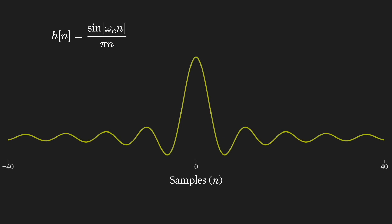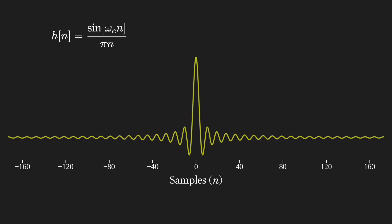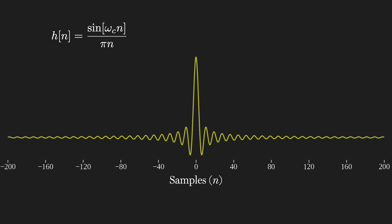They're infinite in duration, extending to positive and negative infinity. Yes, the oscillations get small as you get further away from time zero, but they are never completely zero. So we can't store or compute this type of infinite length impulse response, since this one doesn't rely on output feedback. This means that the ideal low-pass filter is not realizable in practice.